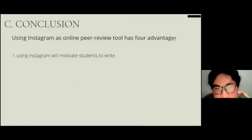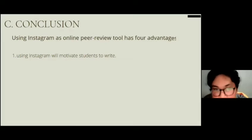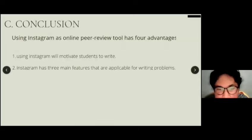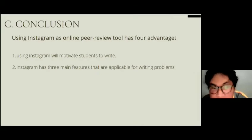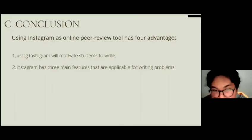Moving to the conclusion: Instagram is a social media used to share photos and videos, and it can also be applied for teaching and learning settings. The social media is capable of serving as a tool for online peer review activity for writing. Using Instagram as an online peer review tool has four advantages. First, it will motivate students to write, since Instagram is used by many people. Second, Instagram has three main features applicable for writing: making captions, giving and replying to comments, and editing or deleting captions and comments — all useful for online peer review.